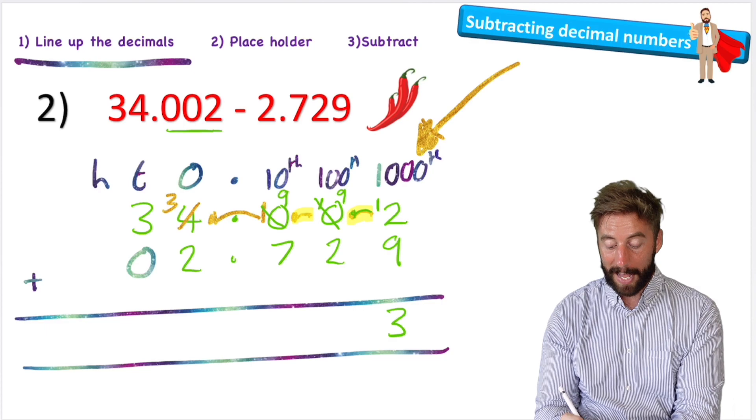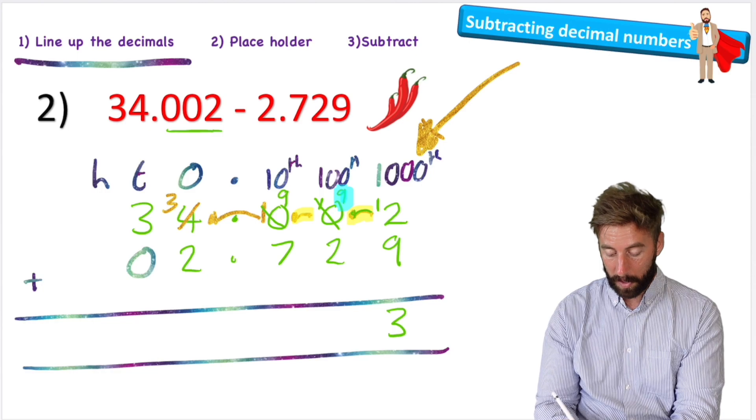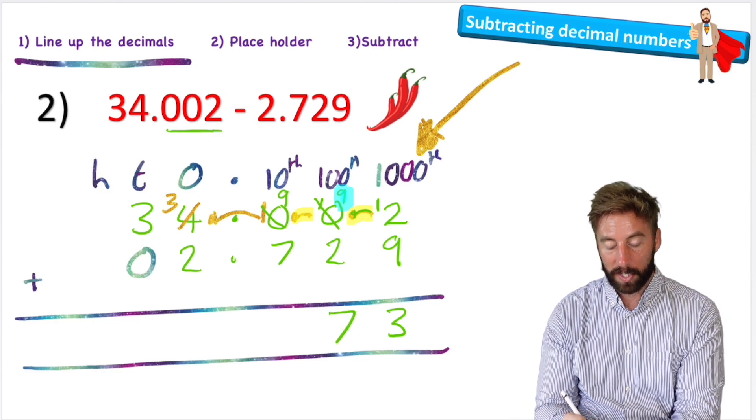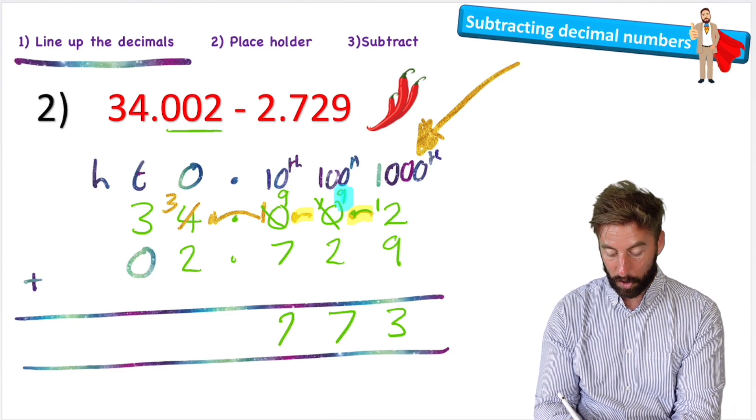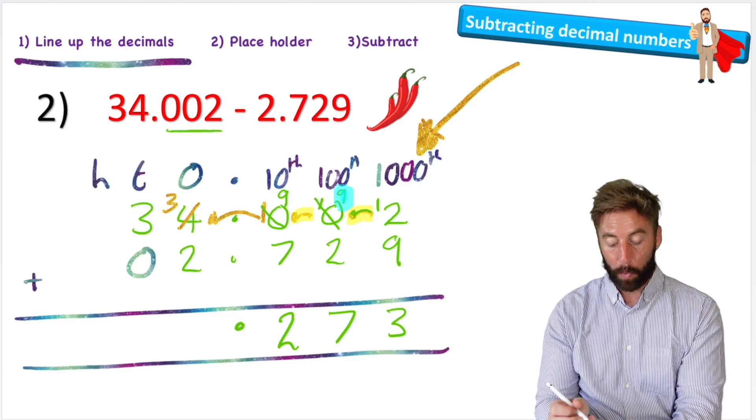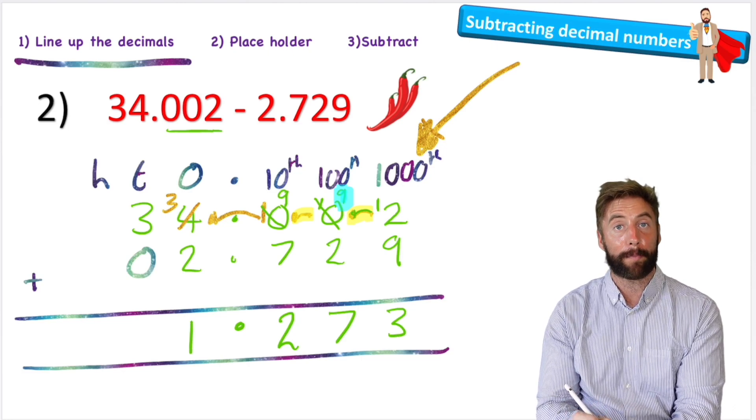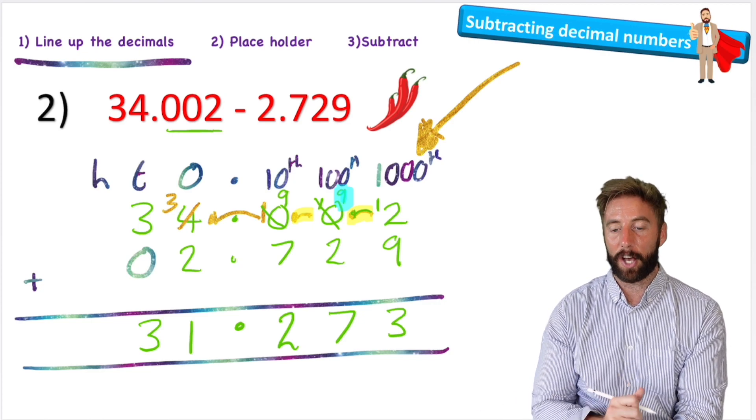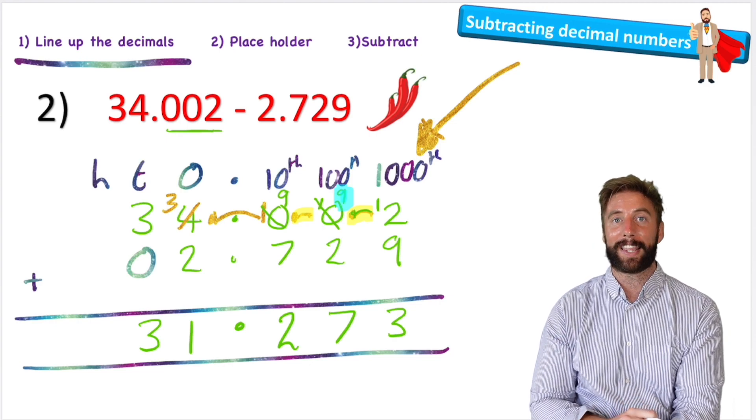Looking at this column closely, it was a zero, then it was a ten, but now it is a nine. Nine subtract two is seven. And again, same thing for the tenths column: it was a zero, then a ten, and now it's a nine. Nine subtract seven is two. Put back my decimal point. And now I'm into the ones column: three subtract two is one. And in the tens column, three subtract my placeholder zero is still three. So my answer is 31.273, or thirty-one and two hundred and seventy-three thousandths.